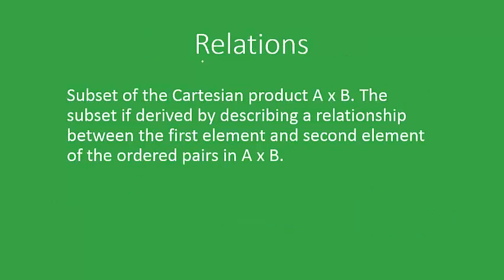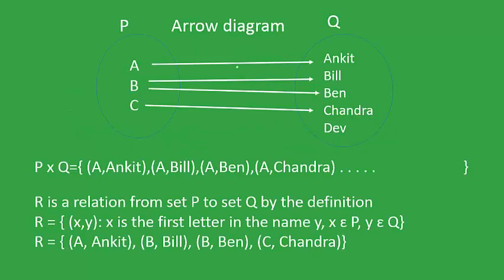Here, I would like to introduce what are relations. Relations are a subset of the Cartesian product A cross B. The subset is derived by describing a relationship between the first element and the second element of the ordered pair A cross B. The meaning will be clear through this example.